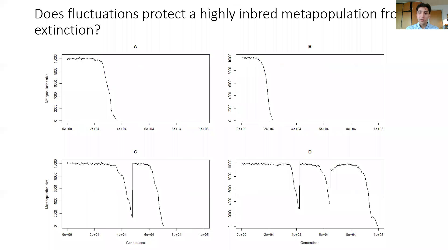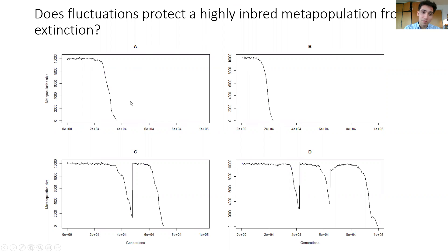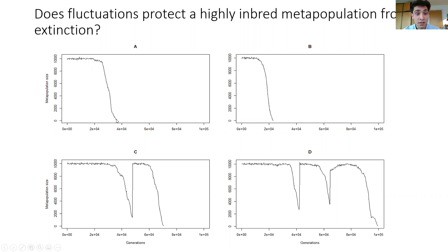Now, when you run a lot of replicates with this model, you actually see quite different patterns. Sometimes you get quite simple and predictable patterns, as shown in panels A and B — that is, if you monitor the metapopulation size throughout the whole simulation, sometimes you get fairly boring dynamics where after a while the population just completely flatlines, accumulates a lot of deleterious mutations, and goes completely extinct, hitting a metapopulation size of zero after some thousands of generations.